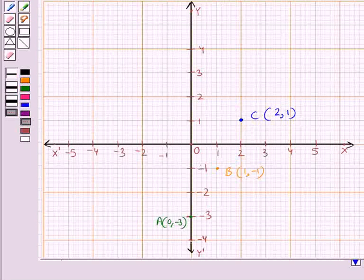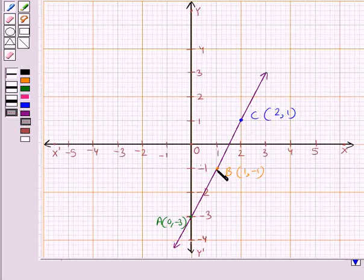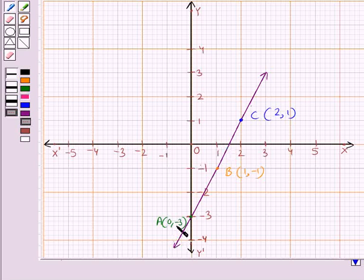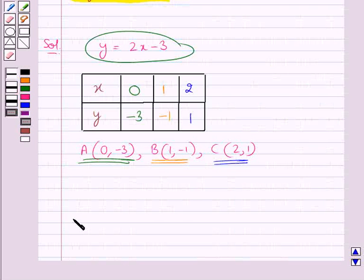So as you can see we have got 3 points on the graph: A, B and C. So we have joined these 3 points and we have got this line. This line is the graph for the equation y is equal to 2x minus 3. With this we complete the session. Hope you have understood this question.